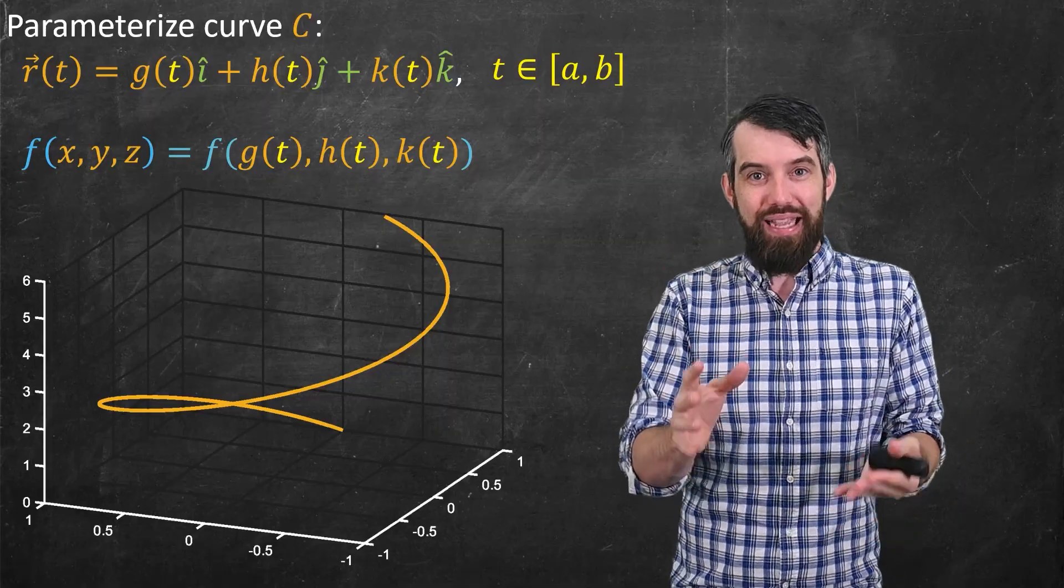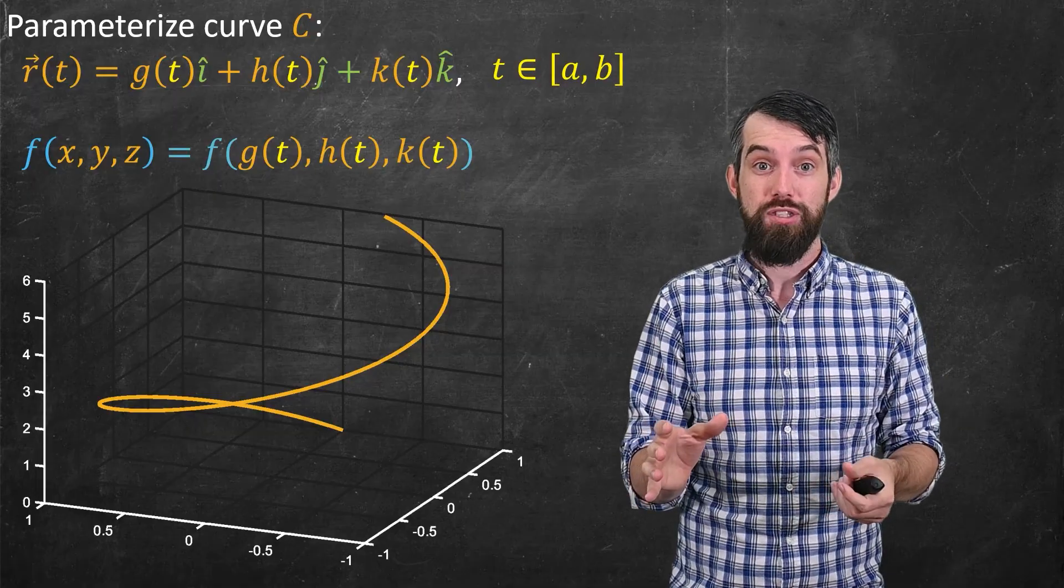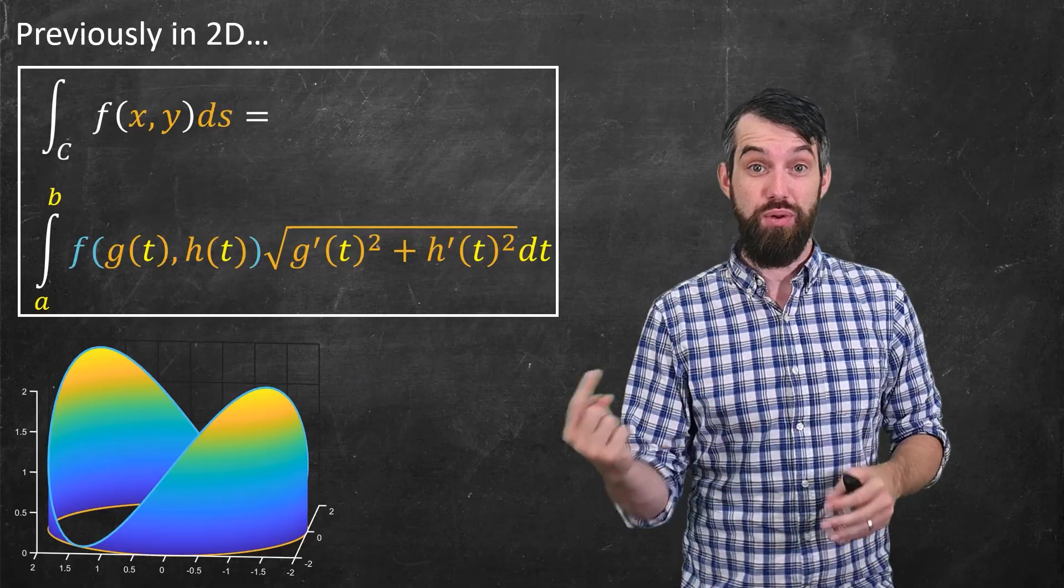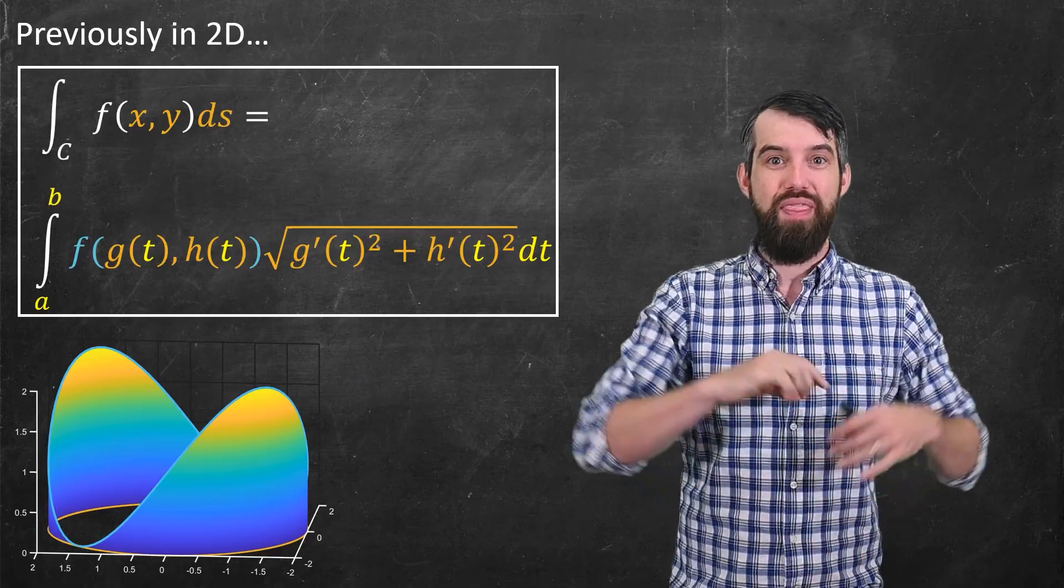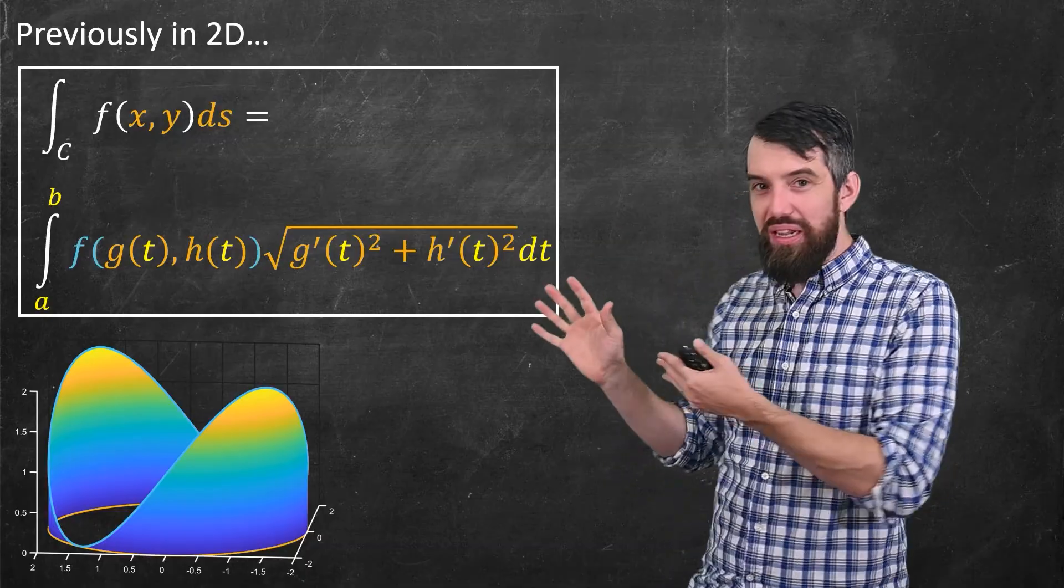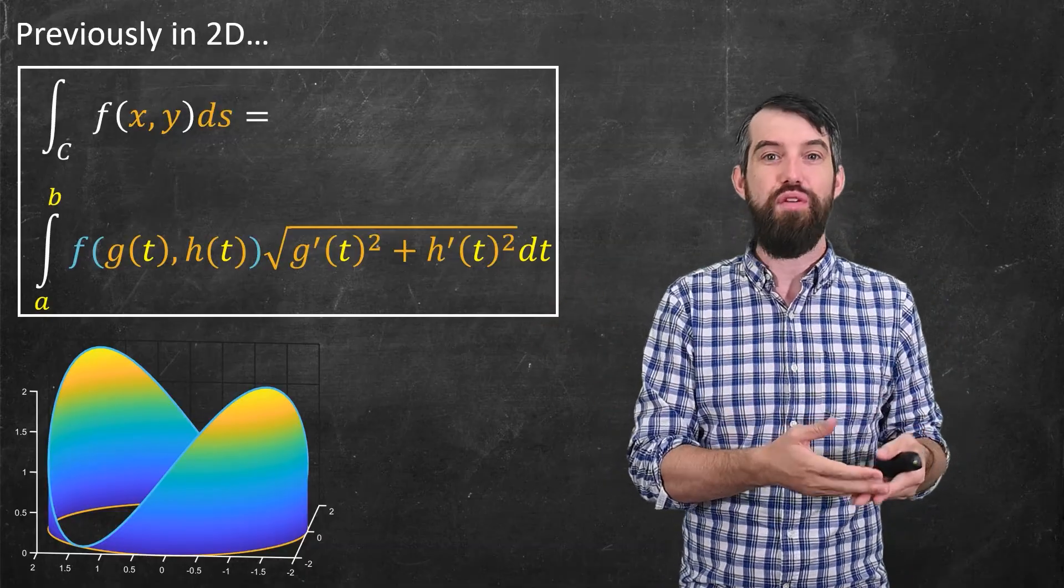But that's okay, because the same basic idea of a line integral is going to apply. So what was our formula before? This is what we saw in the 2D case. It was the curve down in the domain, and then the function was above it. And then we had this formula that said the line integral of the curve and we got some expression.